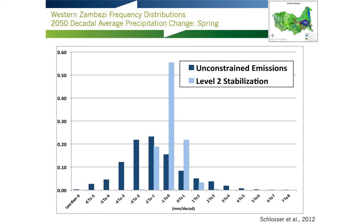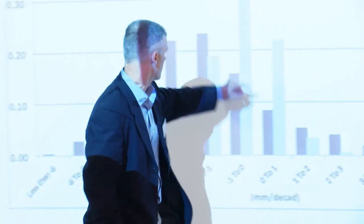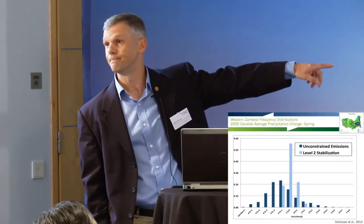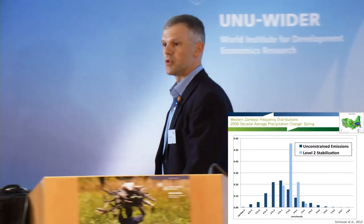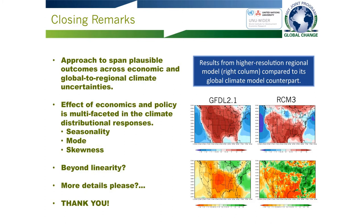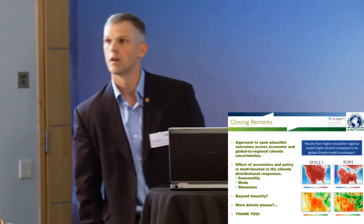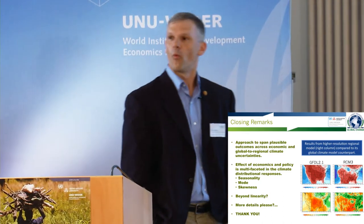These next two results are for precipitation changes. The most striking result is for the western Zambezi in springtime: for the unconstrained emission scenario you see a very broad distribution crossing both positive and negative precipitation changes, but the mode sits in a drying scenario. In the level two stabilization scenario, not only has the distribution been shrunk, but the mode has moved to just about no precipitation change — very compelling and striking. You'll find out in just a second whether it's important. These summary bullets are just regurgitating what I've told you: the biggest features on the climate side are very marked responses not only in the seasonality but also in the modes and skewness of the distributions.